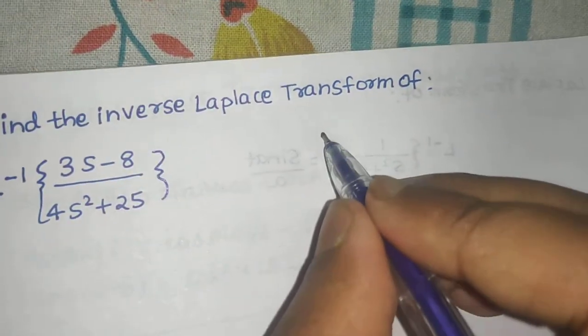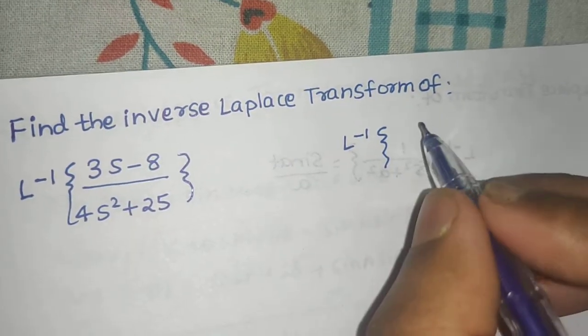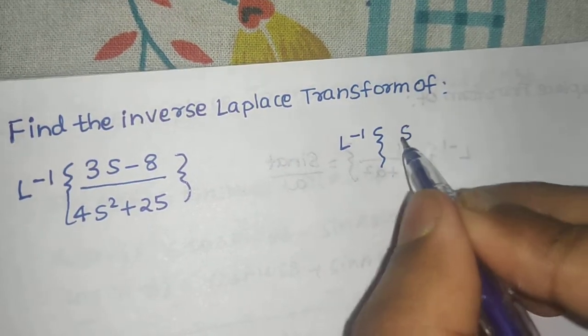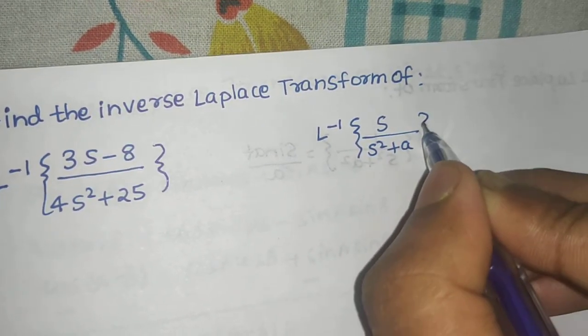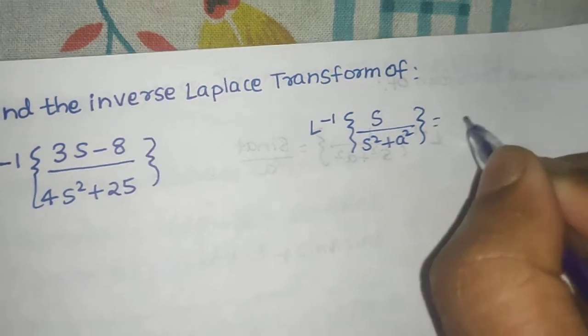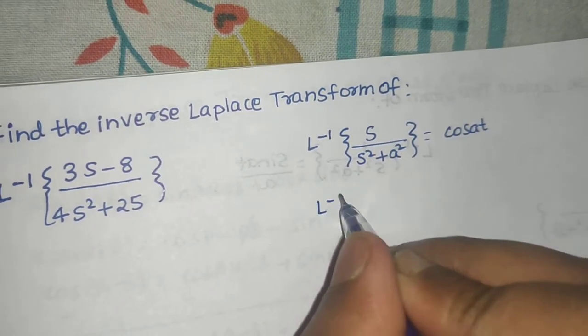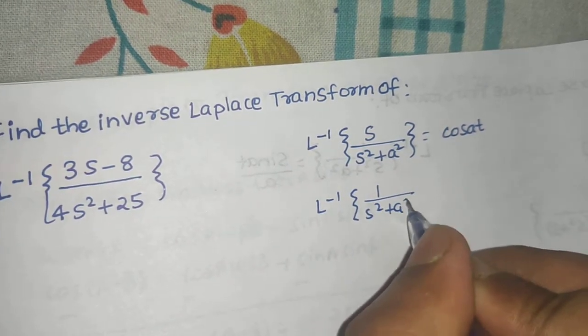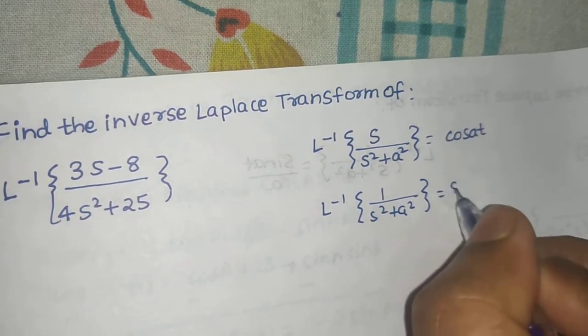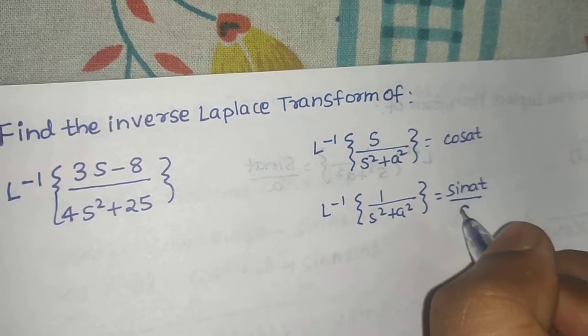Now two basic formulas which we already know: Laplace inverse of S divided by S square plus A square, this is cos A t. And Laplace inverse of 1 divided by S square plus A square, this is sin A t divided by A.